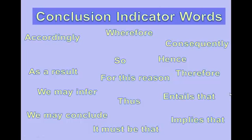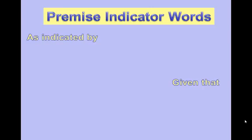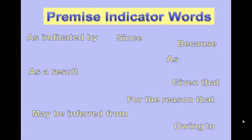There are also premise indicator words, and these include: given that, as indicated by, owing to, because, may be inferred from, as, as a result, since, for the reason that, in that, as much as, for.